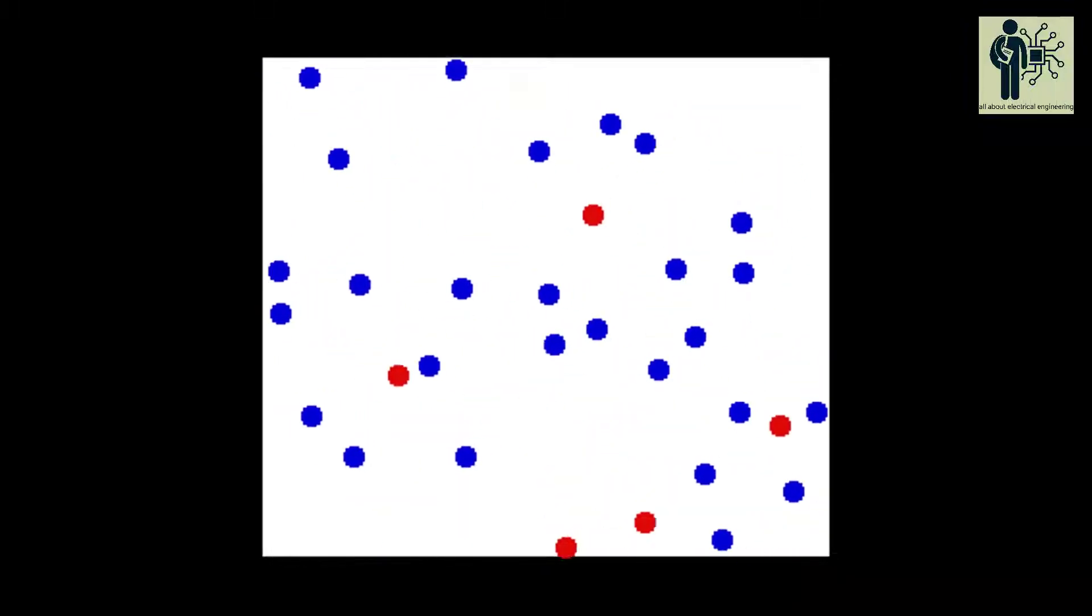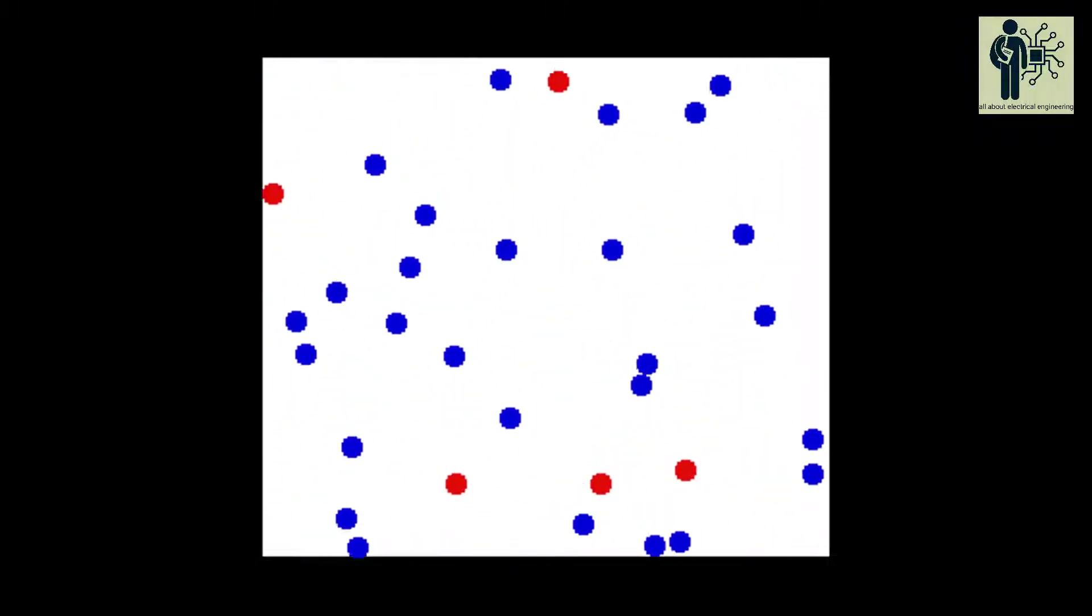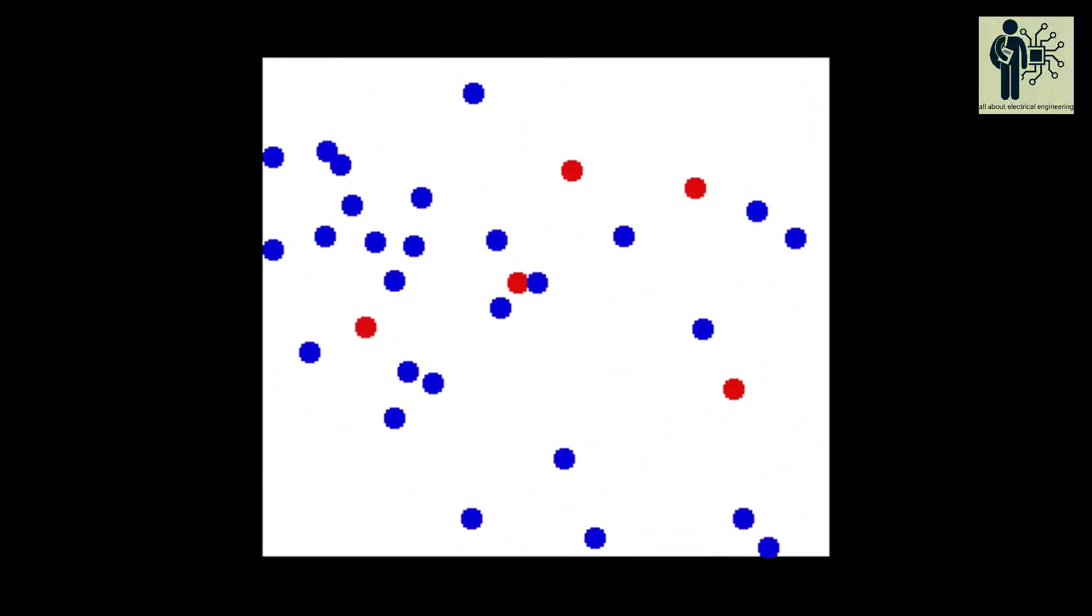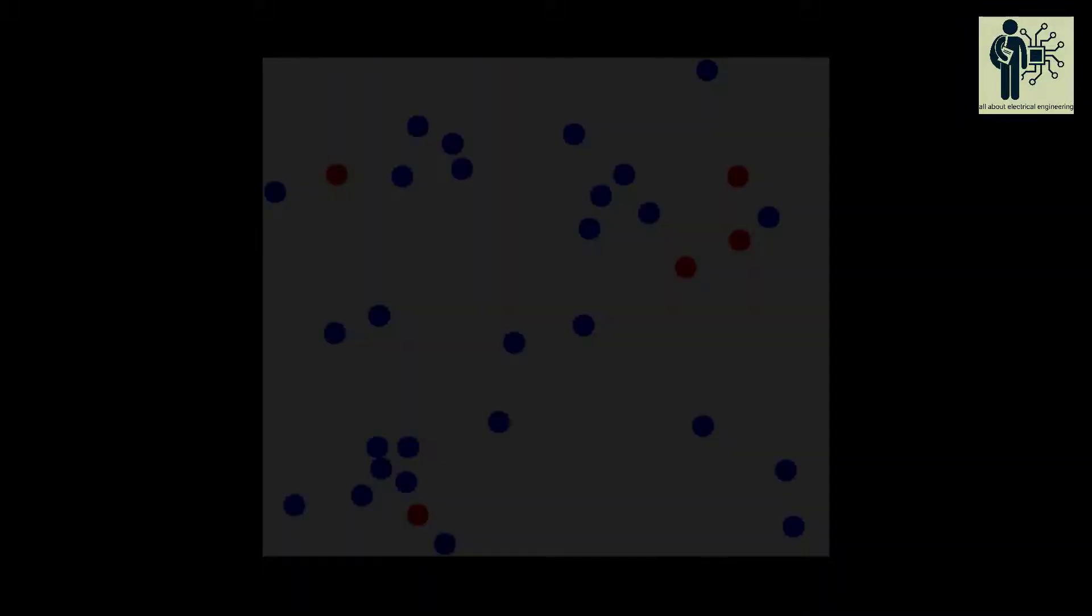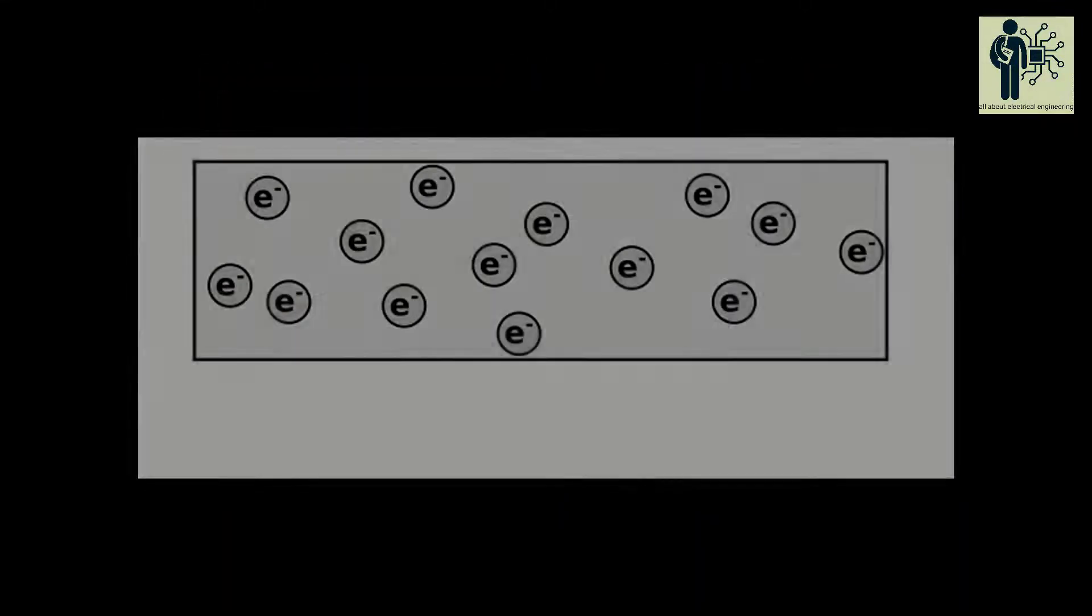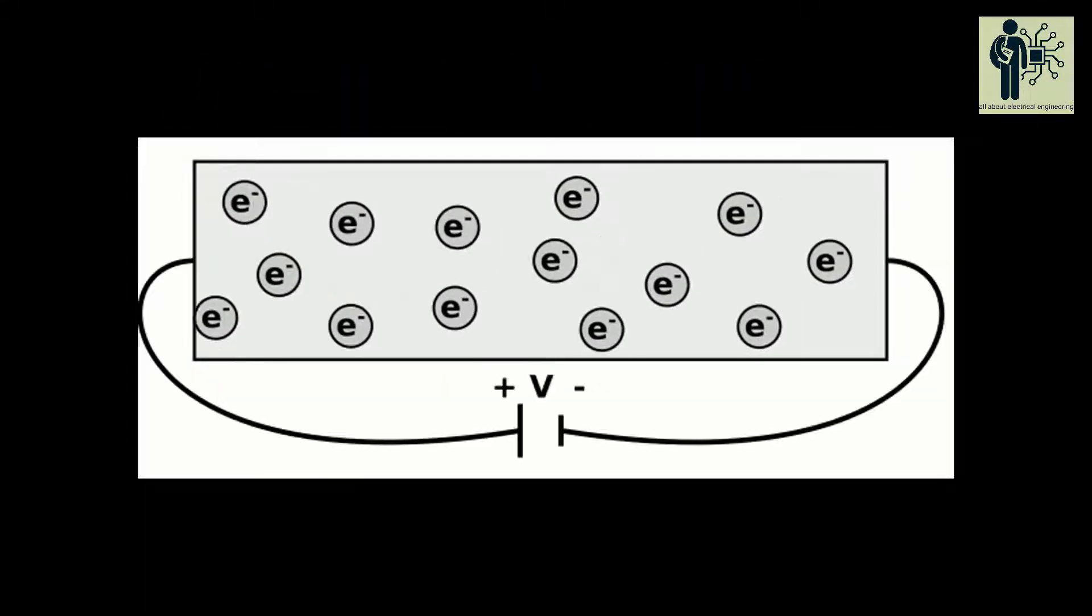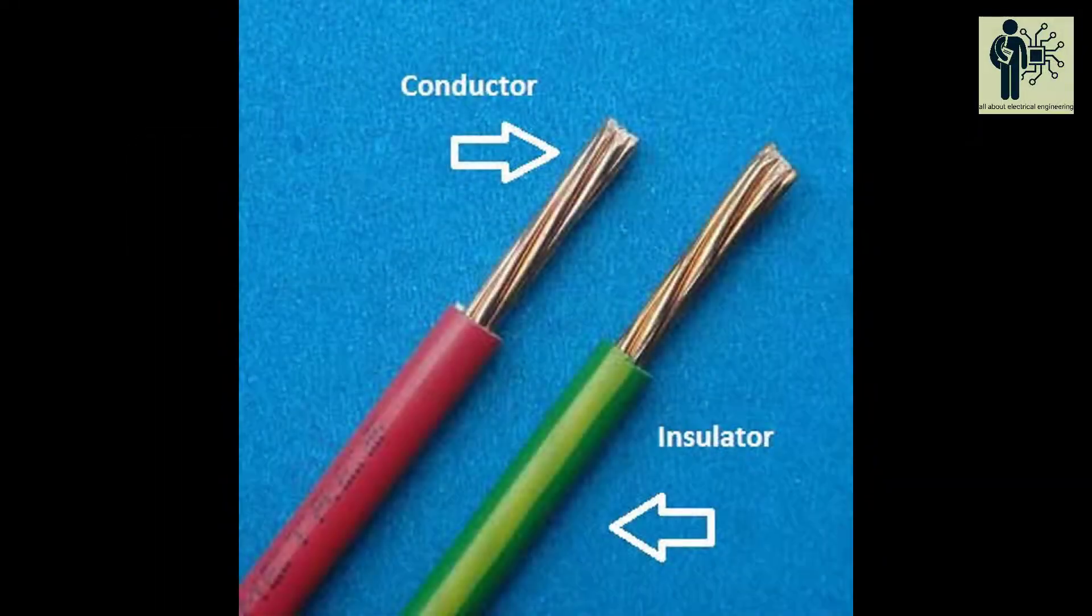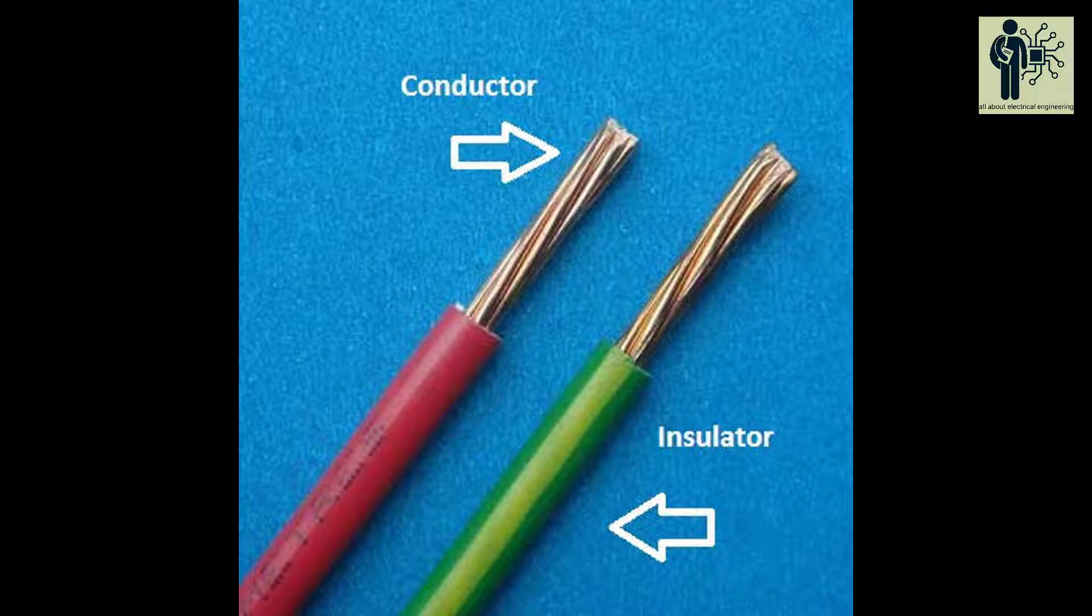Certain substances, that is metals such as silver, copper, aluminum, etc., offer very little opposition to the flow of electric current and are called conductors.